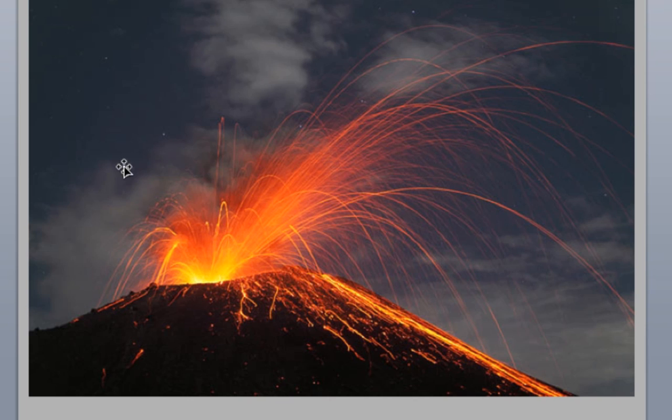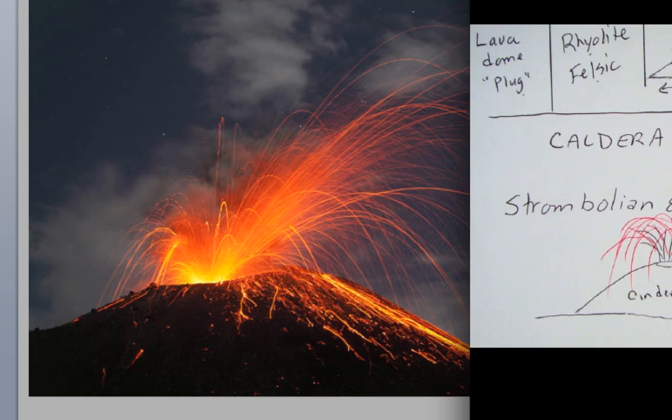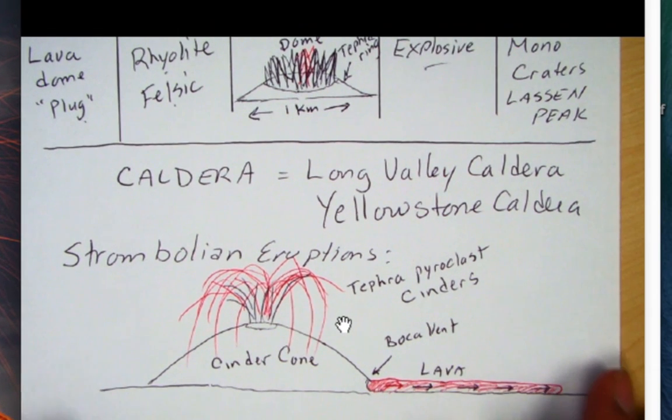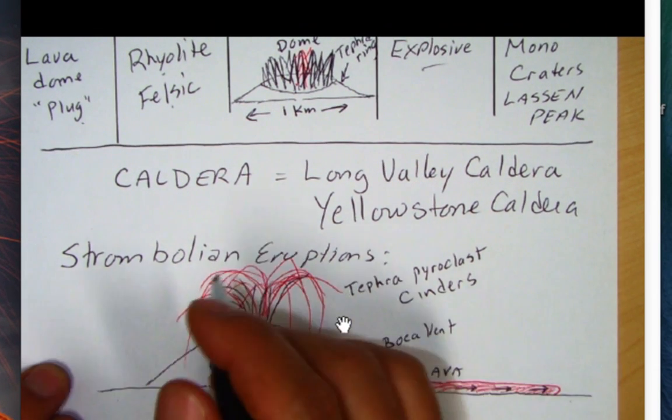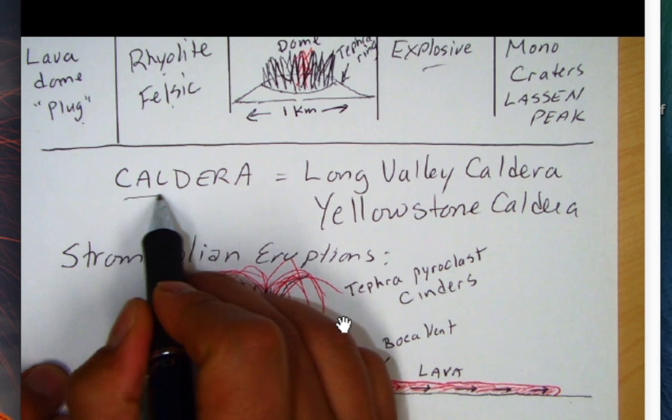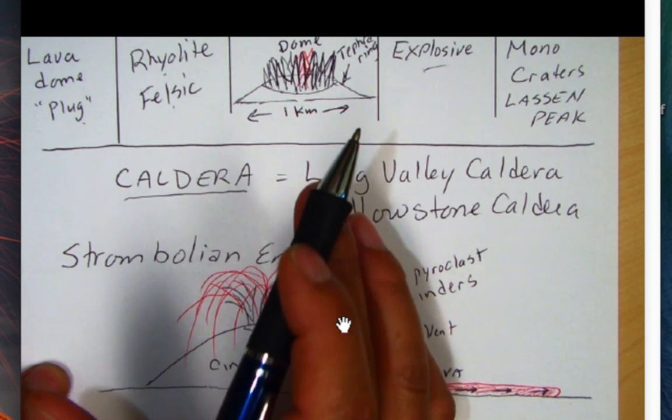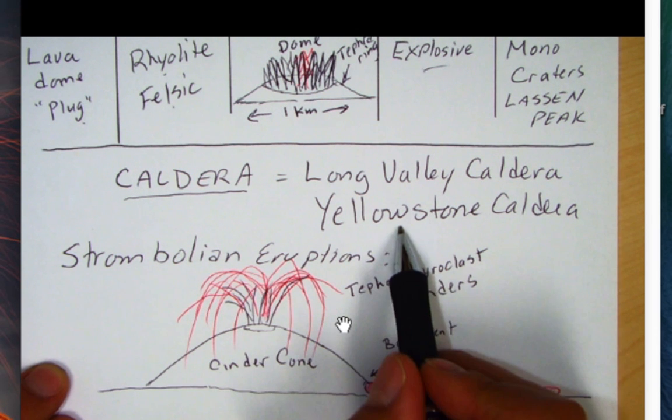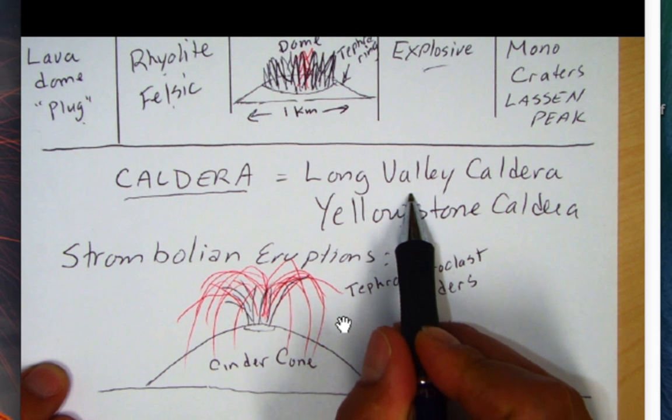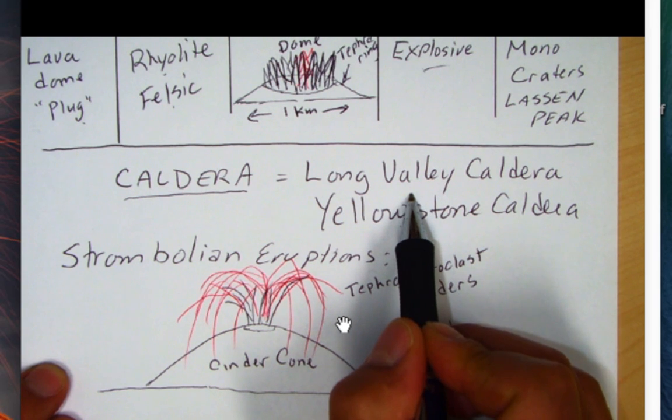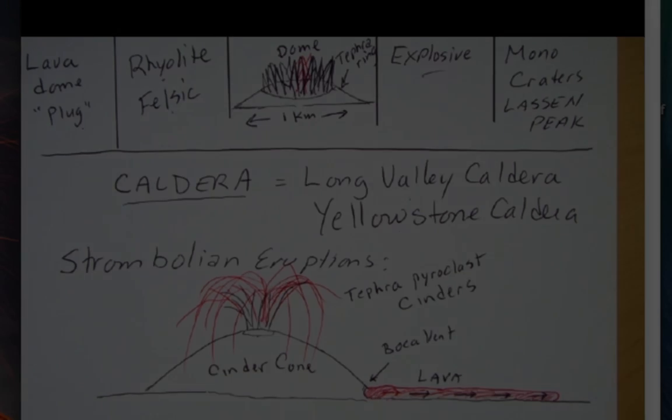Now as we go back another volcano that I'll talk about later on when we do California young volcanoes is a caldera. Now caldera is a much larger type of volcano like a Yellowstone caldera and we have one here in California that's very active, it's a Long Valley caldera. So let's stop here and we'll finish off with those later on.